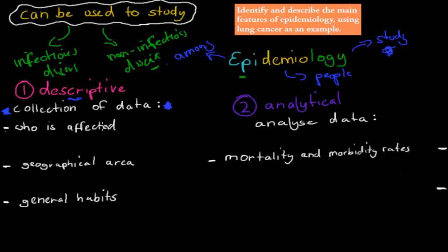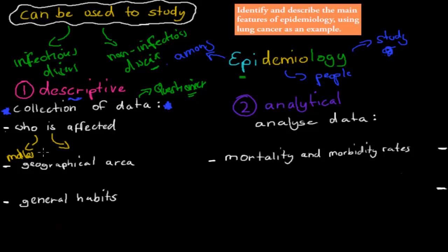In a descriptive study, we collect who is affected. This is often done with questionnaires handed out to lots of people. These questionnaires figure out who is actually affected, the geographic area, and the general habits of people who are affected. For example, for lung cancer, we generally have more males than females. Age is important too — a child will be less likely to have lung cancer than someone who is 50, 60, or 70. And general habits, such as smoking, also play a role in who is affected.